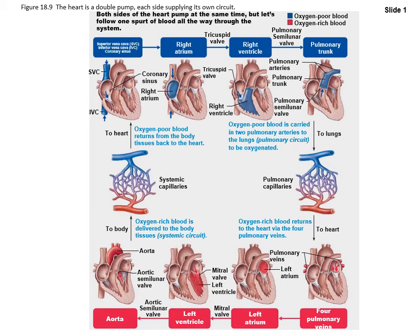This is the pathway of blood through the heart — really important. Blood goes from the right atrium through the tricuspid valve into the right ventricle, then from the right ventricle through the pulmonary semilunar valve and then through the pulmonary arteries to the lungs.